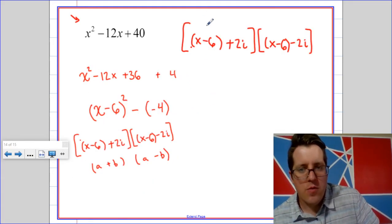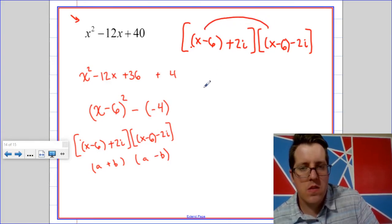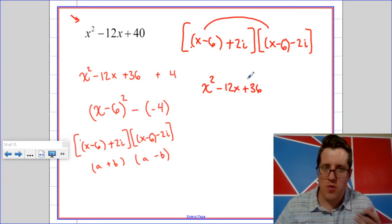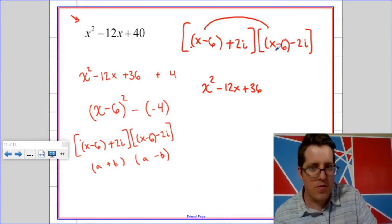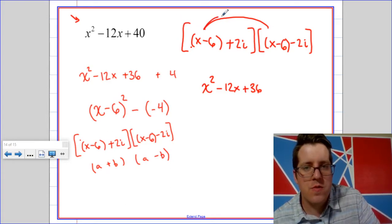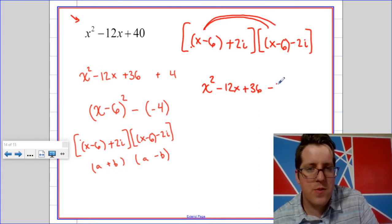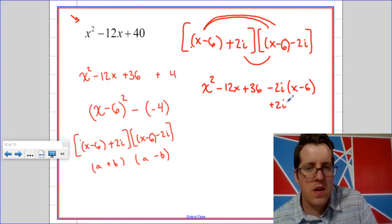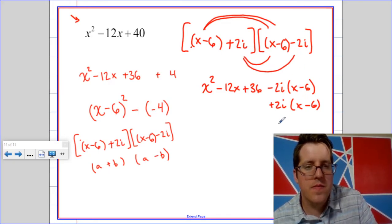So when I go to FOIL this out, I'm going to do my firsts which is x squared minus 12x plus 36. So my firsts actually require their own foiling. So my outers are negative 2i times x minus 6. My inners are positive 2i times x minus 6, and those are going to cancel out, and my lasts are negative 4i squared.